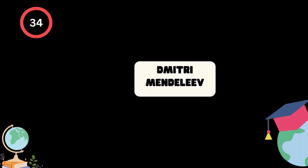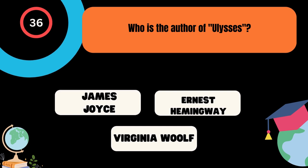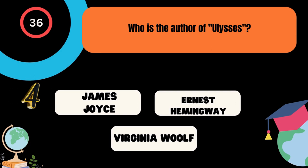What is the primary function of ribosomes in a cell? A. Protein synthesis, B. DNA replication, C. Photosynthesis. And the correct answer is protein synthesis. Who is the author of Ulysses? A. James Joyce, B. Ernest Hemingway, C. Virginia Woolf. And the correct answer is James Joyce.